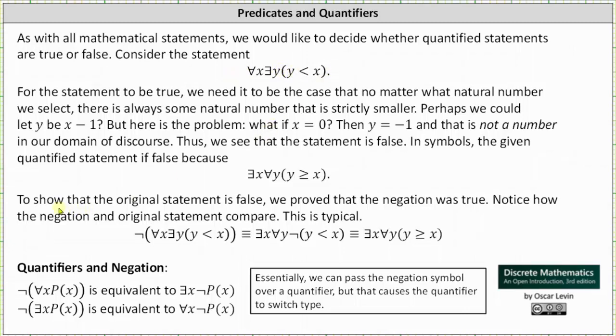To show the original statement is false, we proved that the negation was true. Notice how the negation and original statement compare. The negation of, for every x there exists a y such that y is less than x, is equivalent to, there exists an x for every y such that y is greater than or equal to x. Notice in this intermediate step, the negation passed over the quantifiers, which caused the quantifiers to switch type.